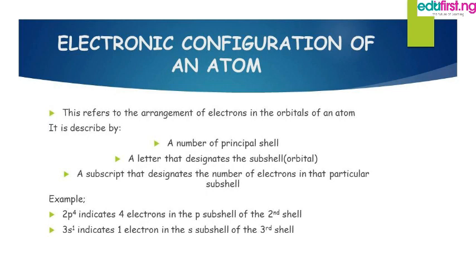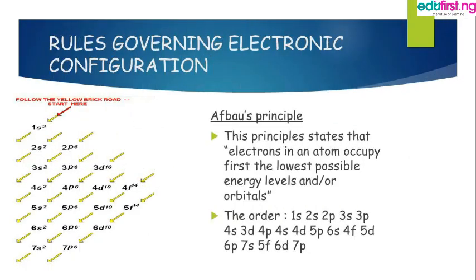There are several rules governing electronic configuration. The first is the Aufbau principle, which states that electrons in an atom occupy first the lowest possible energy level or orbital. Following the Aufbau diagram, starting from the red arrow, you go 1s, 2s, 2p, 3s, 3p, 4s, and so on up to the last, which is 7p.